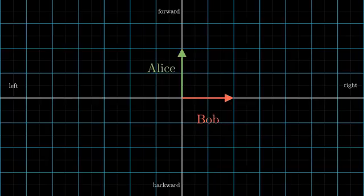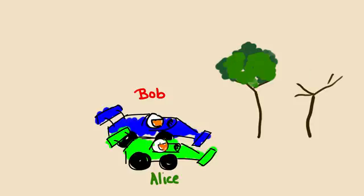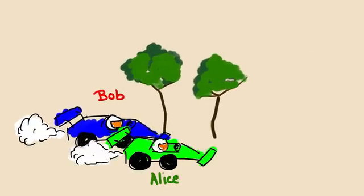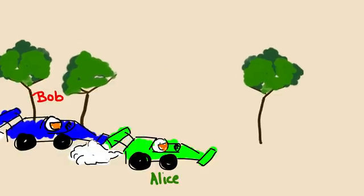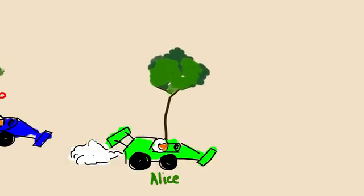Now Alice and Bob are in a drag race. Alice is moving faster than Bob, so she sees him fall further and further behind. Relative to Alice, Bob is moving backwards, and relative to herself, Alice isn't moving.